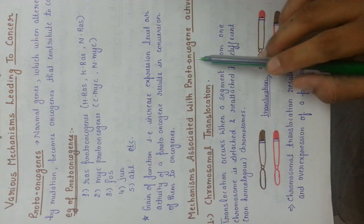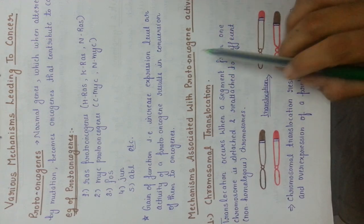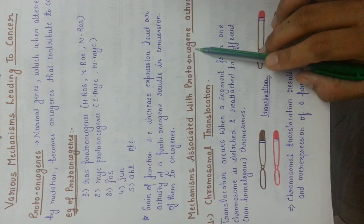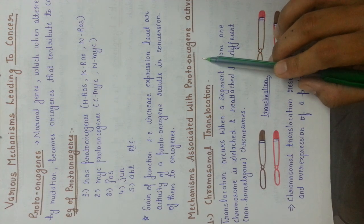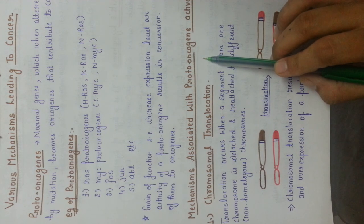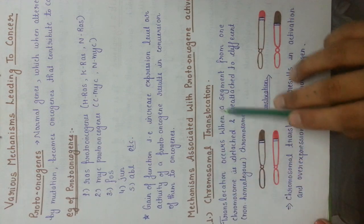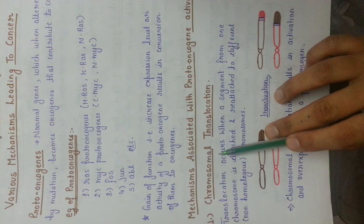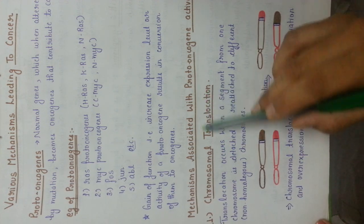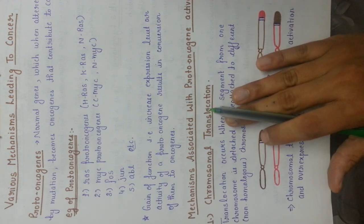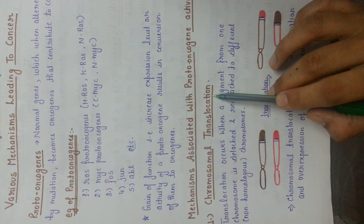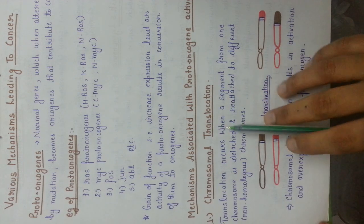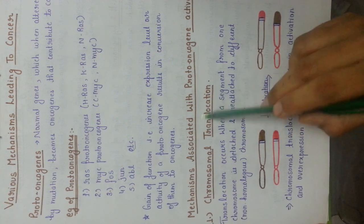We are going to start with the proto-oncogene mechanisms. What will happen is that the proto-oncogenes will ultimately become activated or over-expressed and will lead to the generation of cancer. The first mechanism associated with proto-oncogene activation is chromosomal translocation. What is translocation? First of all, you should know the general terms related to this particular mechanism so that it will be easier to understand.